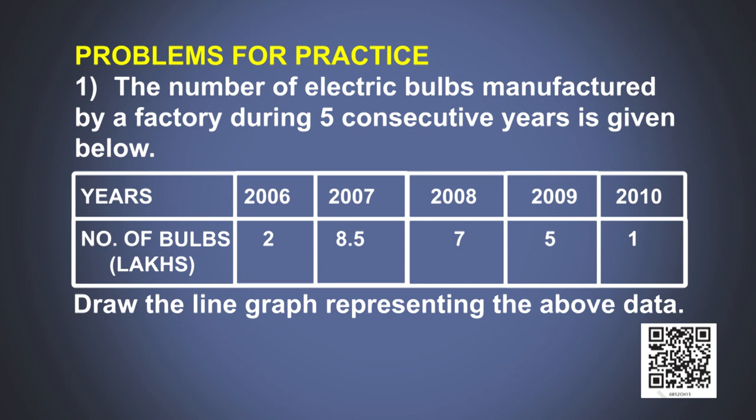The number of electric bulbs manufactured by a factory during 5 consecutive years is given below: In 2006 it is 2 lakhs, in 2007 it is 8.5 lakhs, in 2008 it is 7 lakhs, in 2009 it is 5 lakhs, and in 2010 it is 1 lakh. Draw the line graph representing the above data.